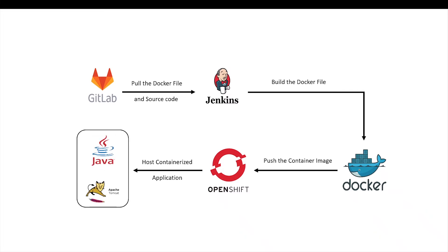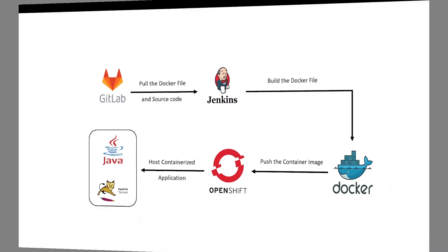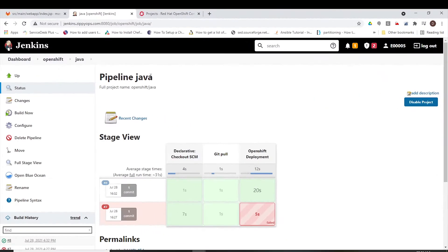It will create a deployment on the OpenShift cluster, which will create a replica set, which in turn creates the pod using Docker images from the OpenShift registry. The deployment will be exposed as a service and a route will be created for the service. Now let us see how the continuous integration and continuous deployment of the Java application happen via the Jenkins pipeline.